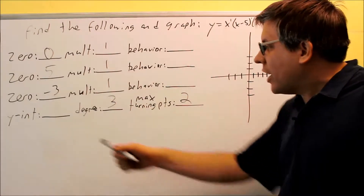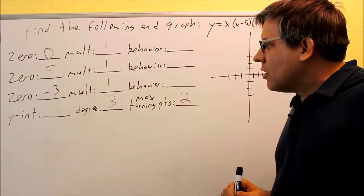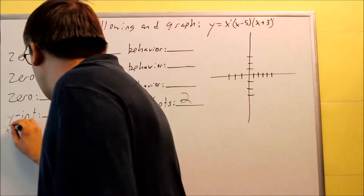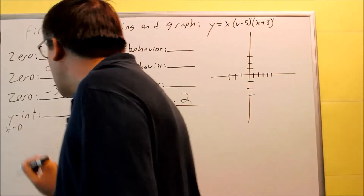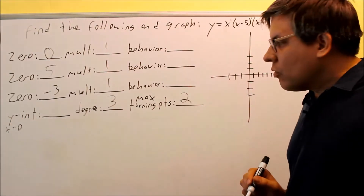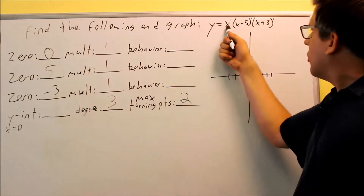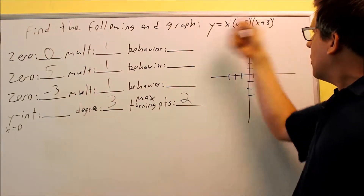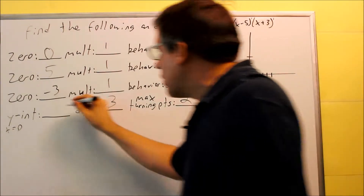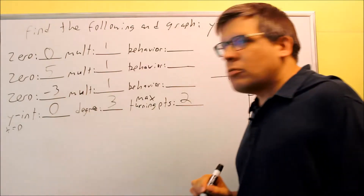Now we're ready to find the y-intercept. The y-intercept is where x equals zero. If I put zero in here, that's going to make the whole thing zero. So that means my y-intercept is going to be zero.